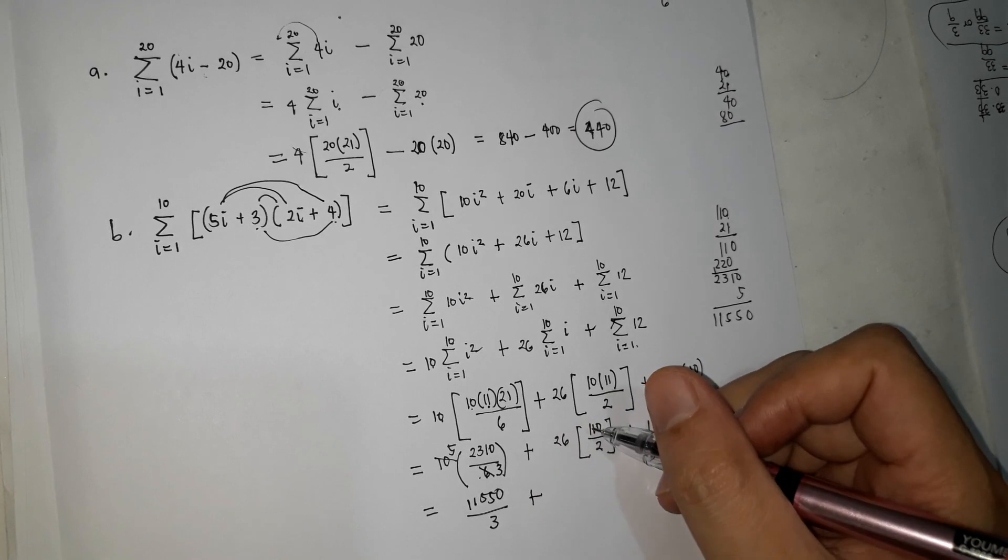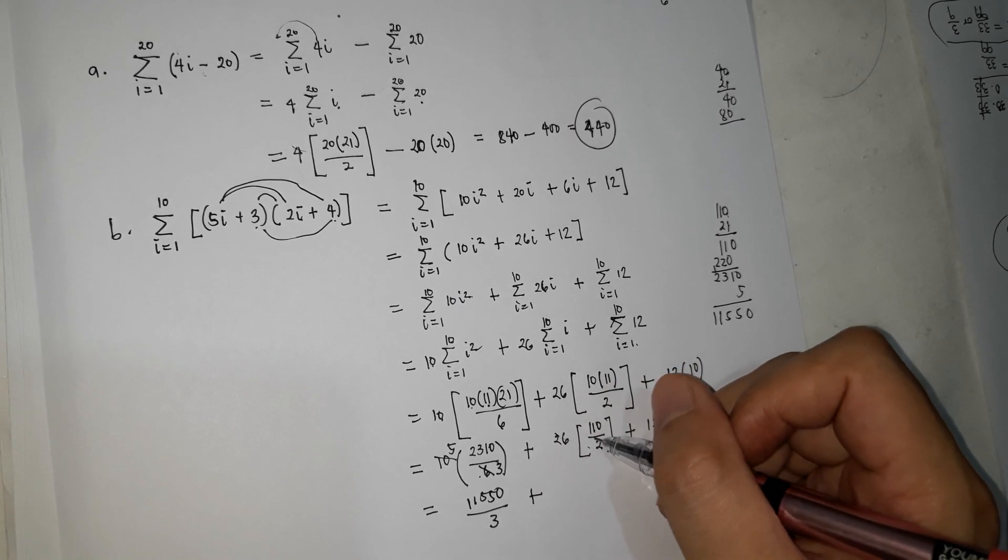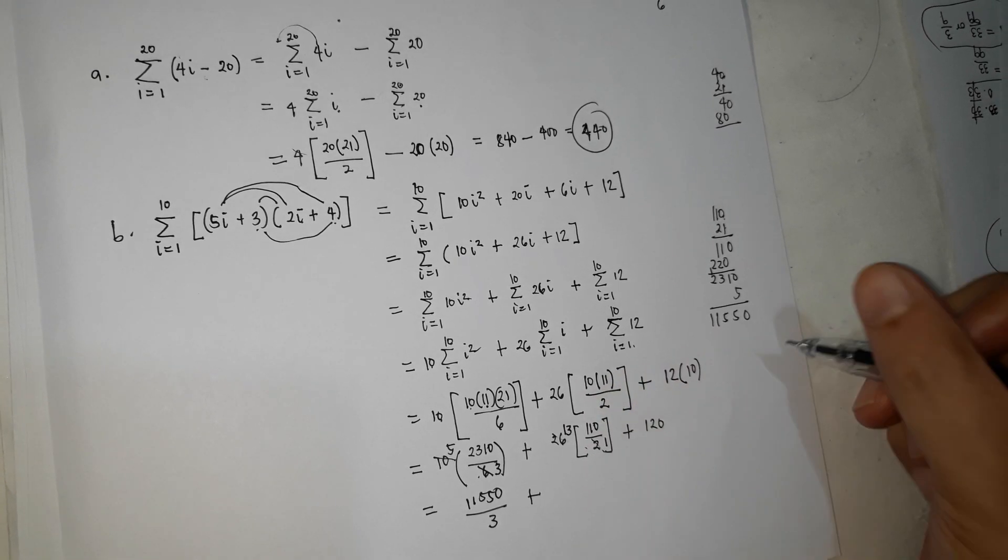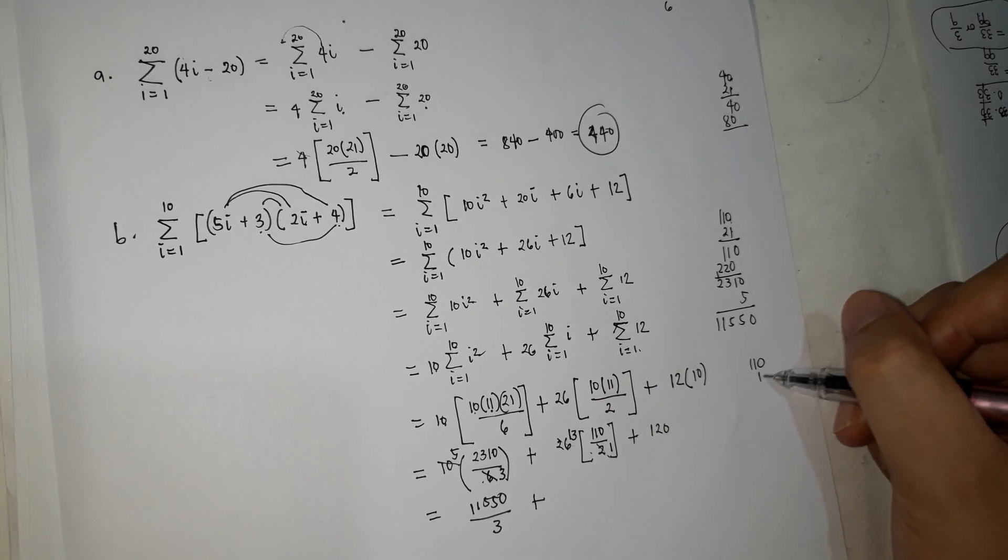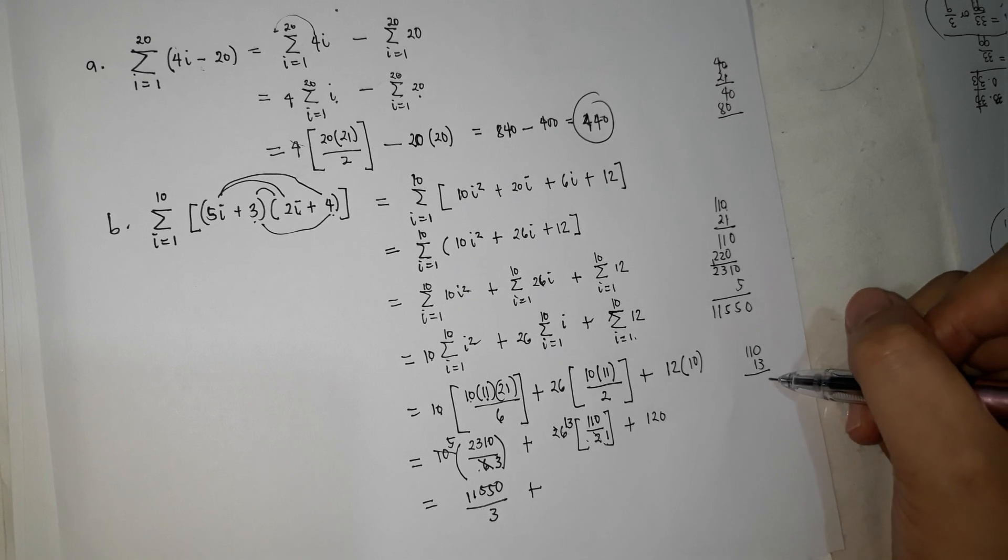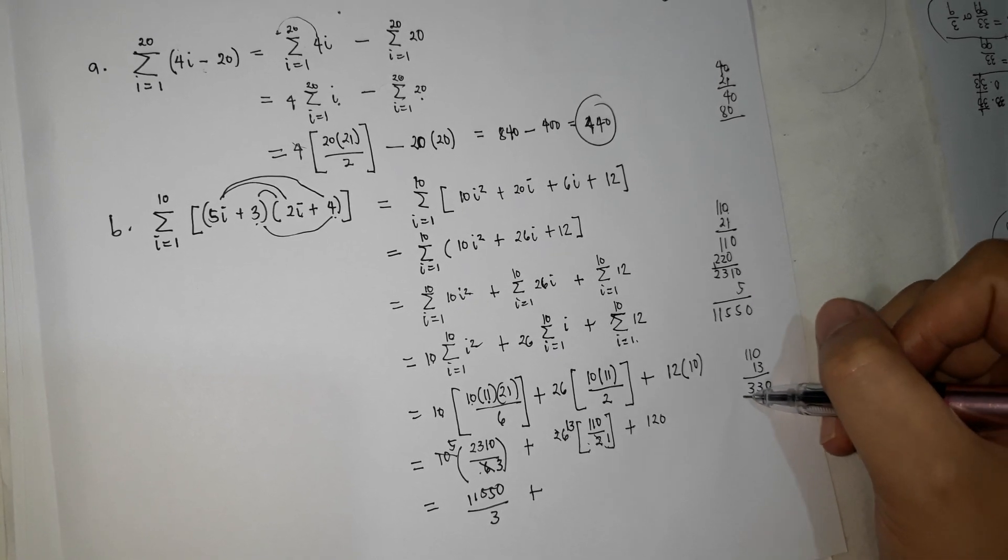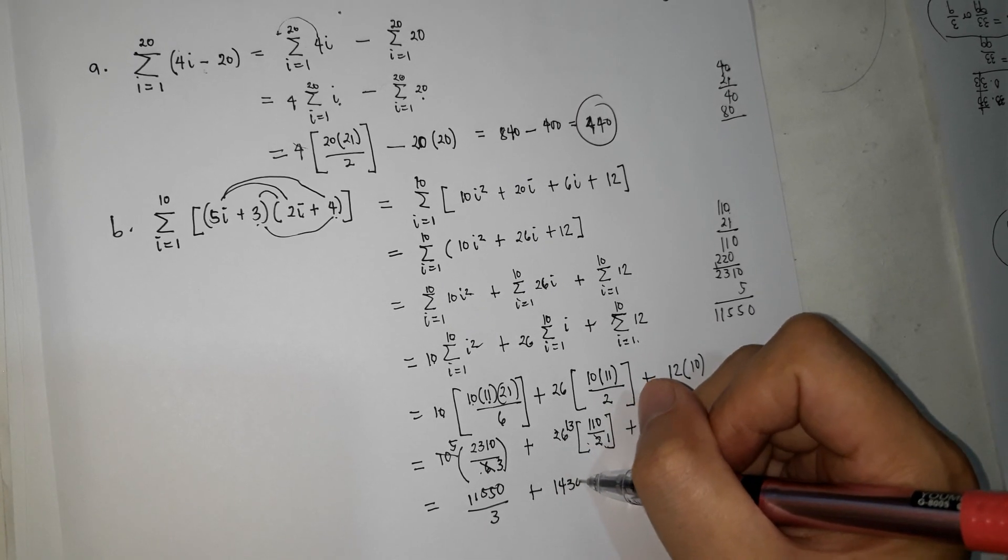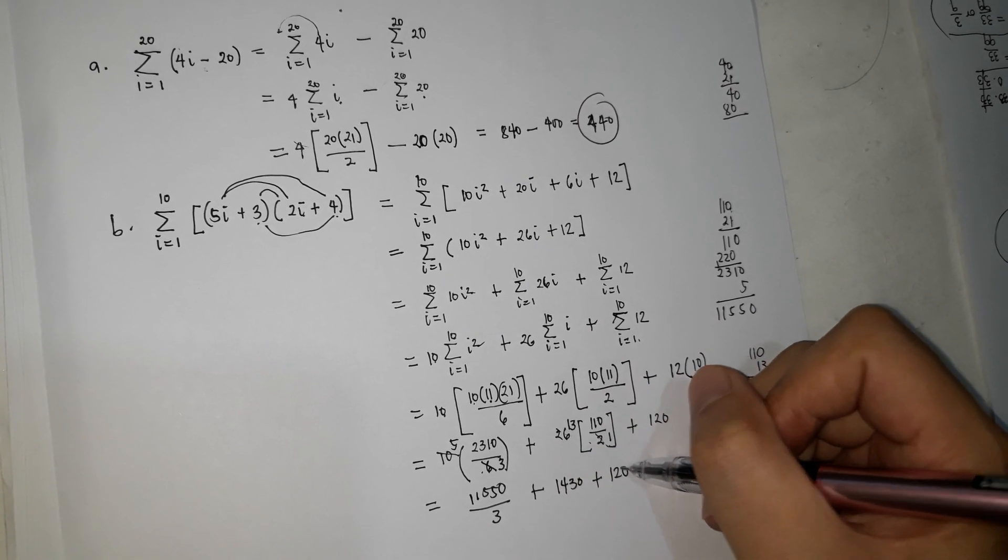pwede mo nang itong simplify, divide mo by 2, magiging 1, ito magiging 13. So ang 110, i-times mo ng 13, 0, 3, 3, 1, 1, 0, 1, 4, 30. 1, 4, 30, plus 120.